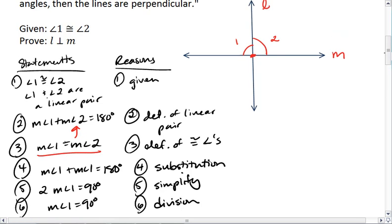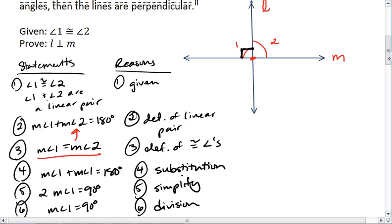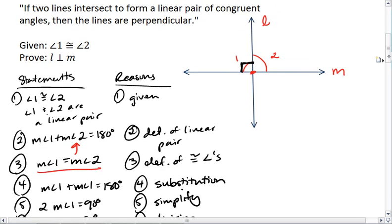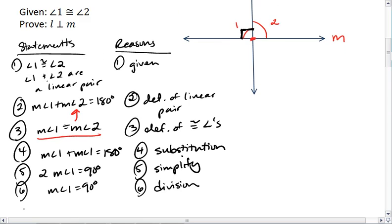Now, let's take a moment and think about this. If angle 1 is actually a right angle, that means that lines L and M must be perpendicular. So we find that L is perpendicular to M, and that is the definition of perpendicular lines. And that's our proof.